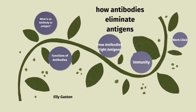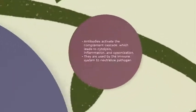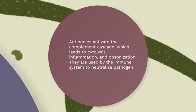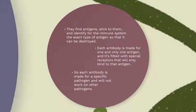Next we'll move on to the functions of antibodies. Antibodies activate the complement cascade, which leads to cytolysis, inflammation, and opsonization. They are used by the immune system to neutralize pathogens. Some functions of antibodies are: they find antigens, stick to them, and identify for the immune system the exact type of antigen so that it can be destroyed.